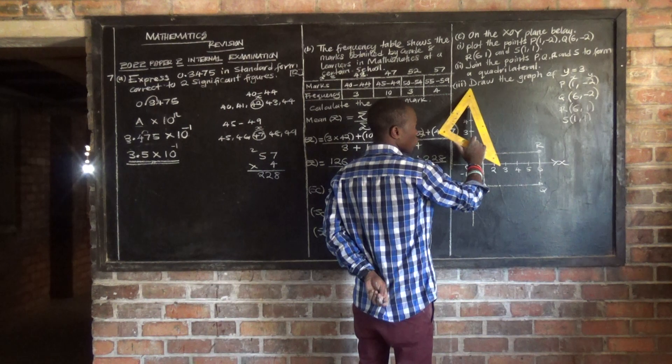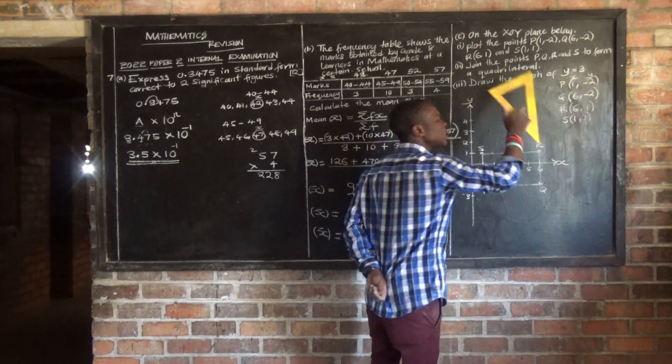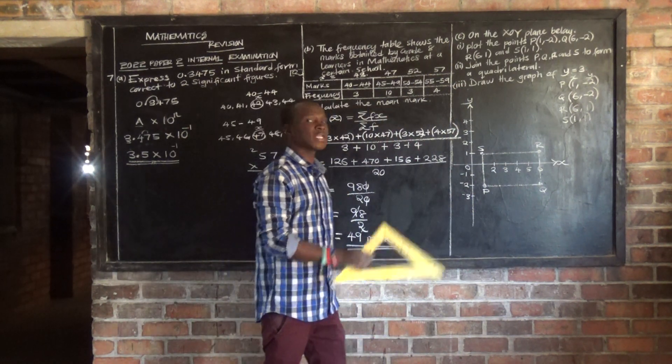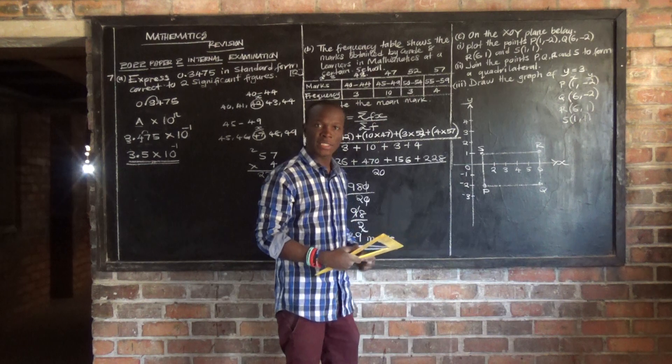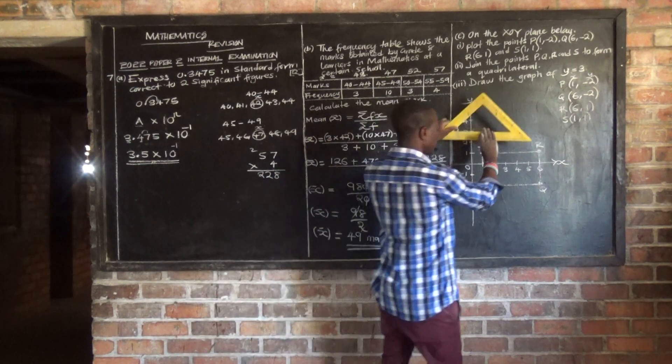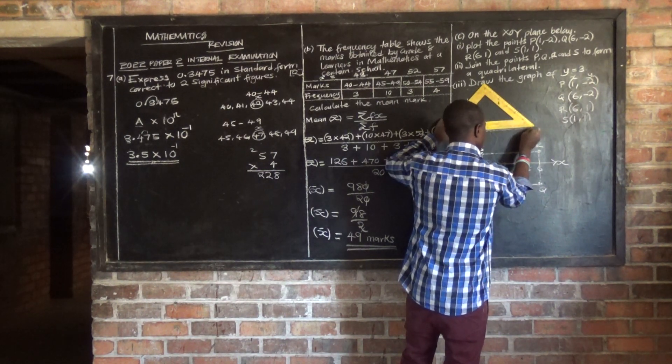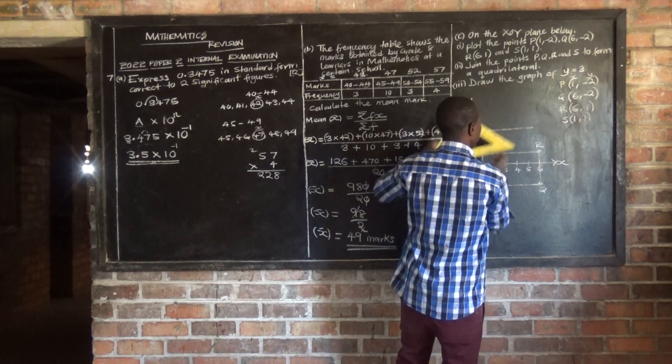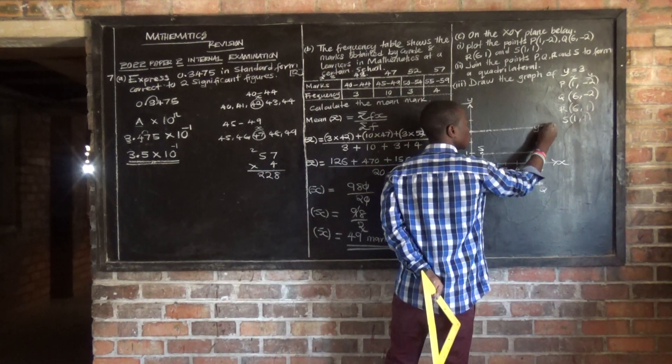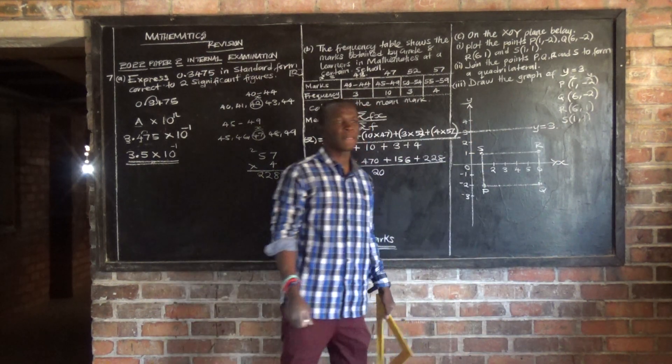Then the last question says draw the graph of Y equals 3. This is a very simple question. What you do is you just go in the Y axis where 3 is. Where is 3 in the Y axis? This is 3. You come up with a straight line, like this, and you say this is Y is equal to 3. We have done, simple as that.